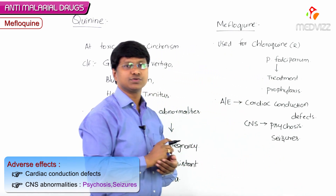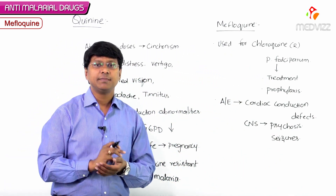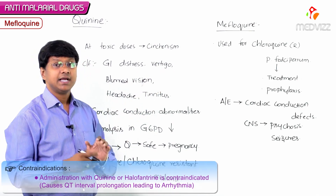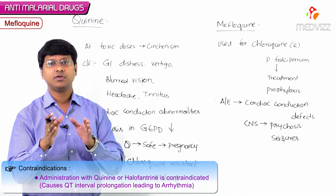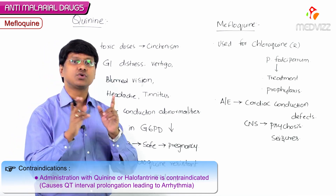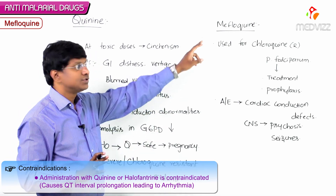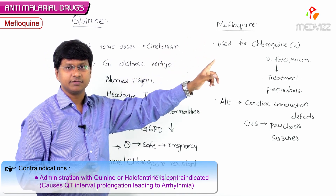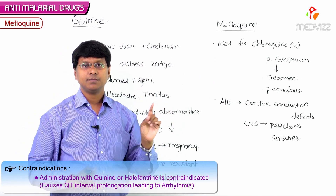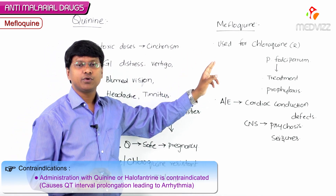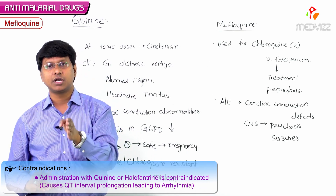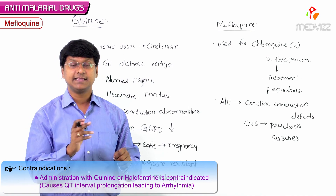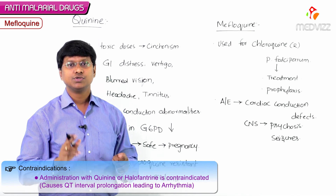The CNS adverse effects include psychosis and as well as seizures. Along with mefloquine, administration with halofantrine or quinine is contraindicated. You should not give quinine or halofantrine along with mefloquine.